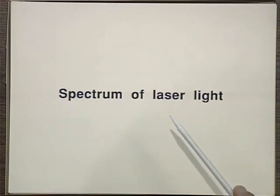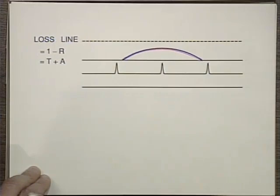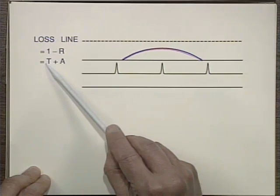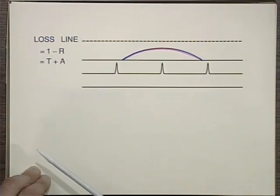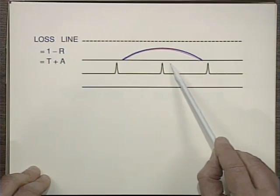Here's the amplifier with its bandwidth and the modes of the resonator. The dotted loss line is 1 minus R — the transmission of the mirror plus absorption. That's the loss the gain must overcome before oscillation occurs. In this situation, the gain is below the loss line, so no lasing occurs.